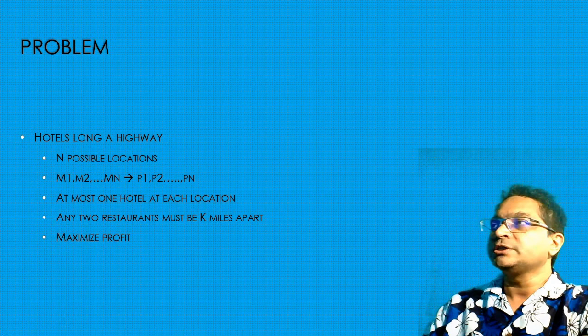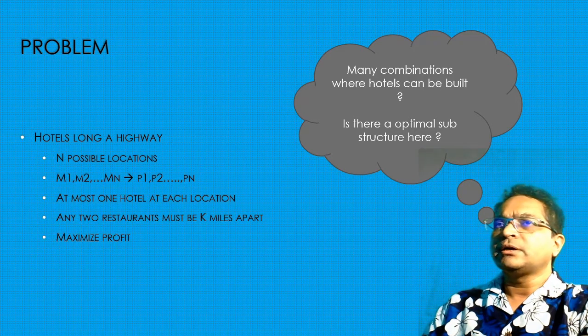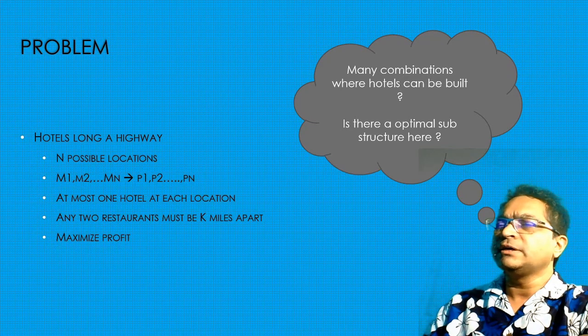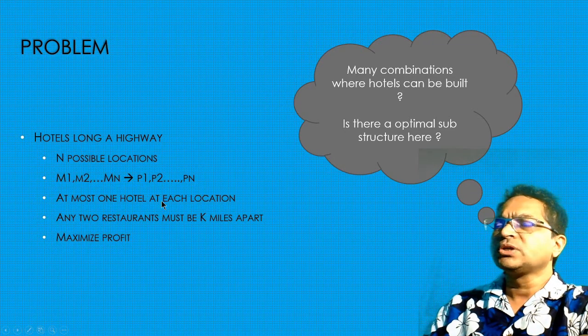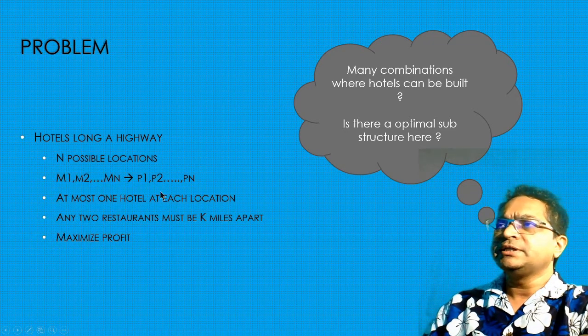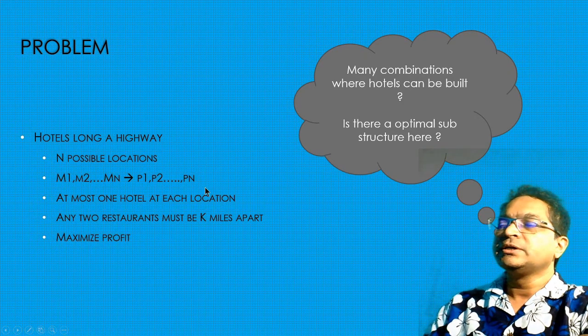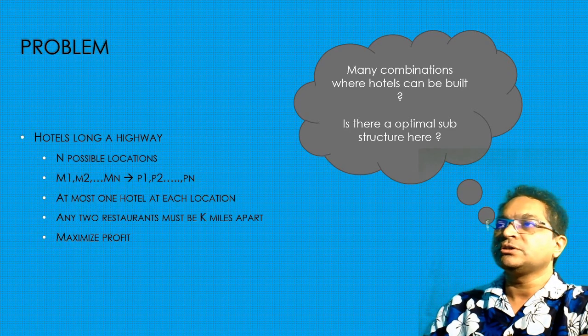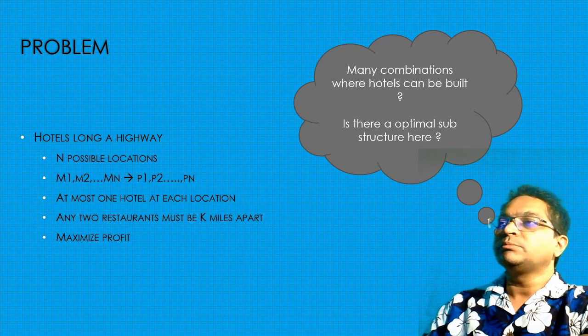The requirement is that we must maximize profit from the location of the hotels. Well, there's so many combinations where the hotels can be built. As a dynamic programming solution, we have to think about is there an optimal substructure to the problem? Right off the bat, you can see that hotels are all linearly located, so every problem can feed from the previous set of problems. If only one hotel was at the first location or the second or third location, the next subsequent location depends on the solution to the previous locations. That's why there is an optimal substructure to this problem.